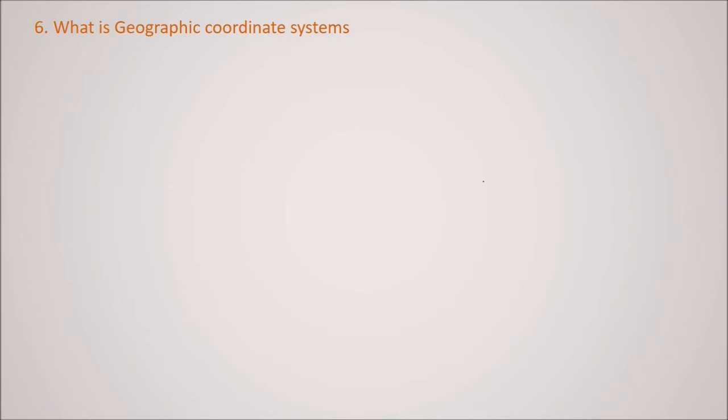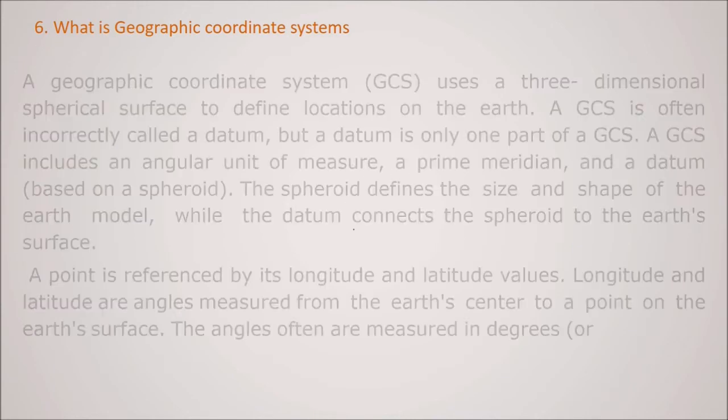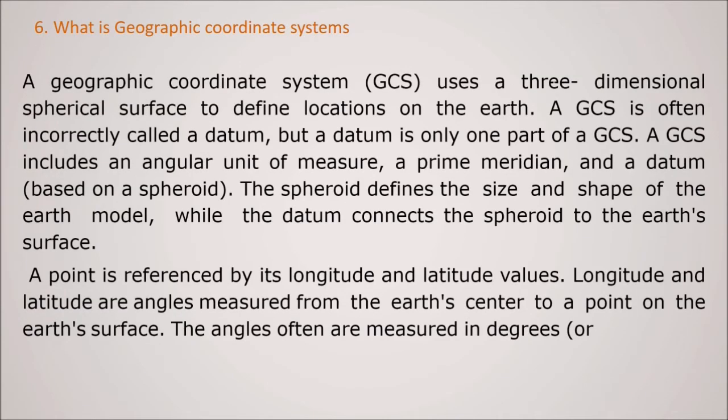What is geographic coordinate system GCS? A GCS uses a 3D spherical surface like this. To define the location on the earth, a GCS is often incorrectly called as sometimes datum. But datum is only a part of GCS. So GCS include an angular unit of major prime meridian and a datum which is based on the spheroid. The spheroid defines the size and shape of the earth model while the datum corrects the spheroid to the earth's surface.